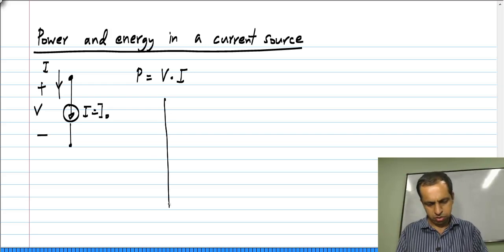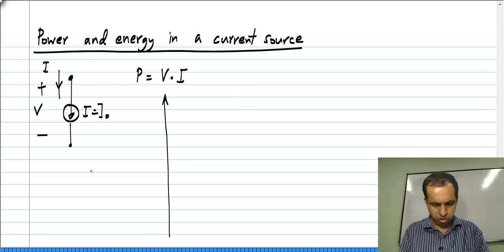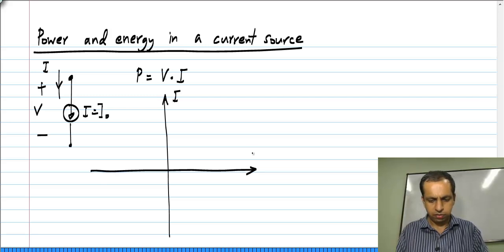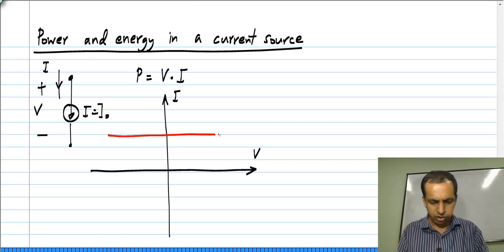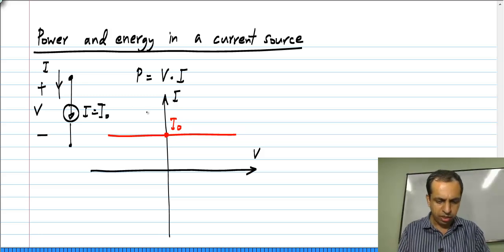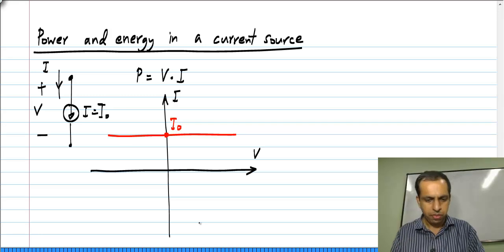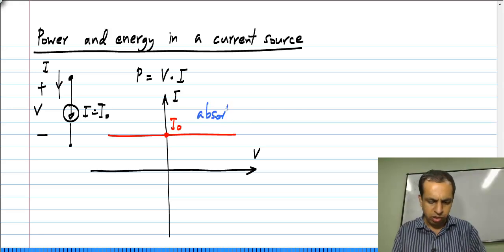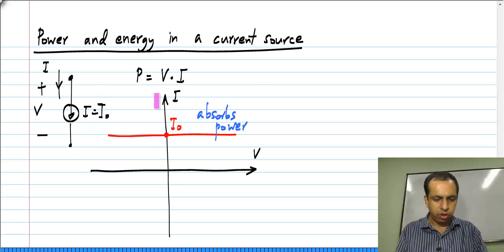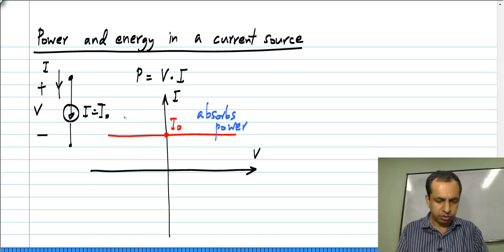The I-V characteristics of a current source are as shown. Assuming I-naught, the value of the current source, is positive — though it could be negative — in the first quadrant where the voltage and current are both positive, the current source absorbs power. In the second quadrant where the current is positive and the voltage is negative, the current source delivers power.